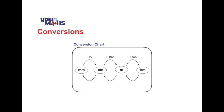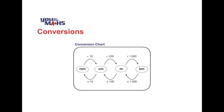To work the other way in the chart, we put arrows going from right to left — from kilometres all the way through to millimetres. One kilometre equals 1000 metres, so we multiply by 1000. Moving from right to left we do the opposite operation: multiply by 1000 from kilometres to metres, multiply by 100 from metres to centimetres, and multiply by 10 from centimetres to millimetres.